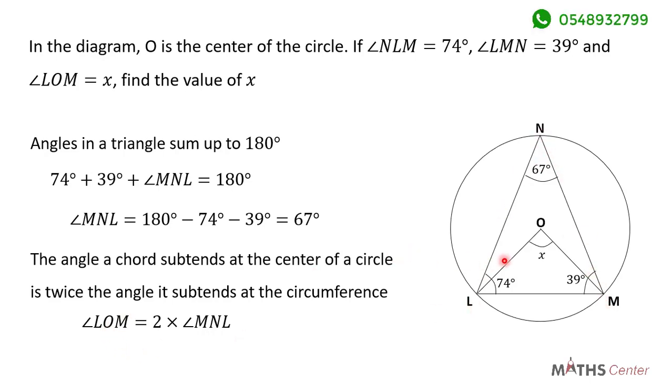Angle LOM is given by X on our diagram, and the value of angle MNL is 67 degrees. So we can say that X is equal to 2 times 67 degrees, and 2 times 67 degrees is 134 degrees. So the value of X is 134 degrees.